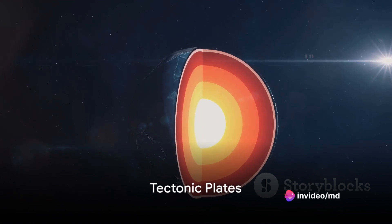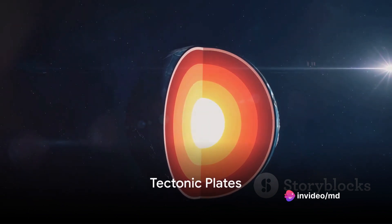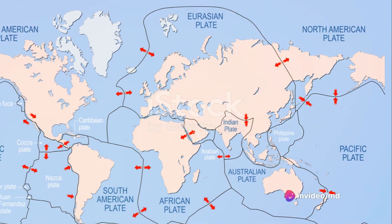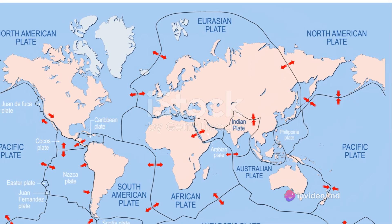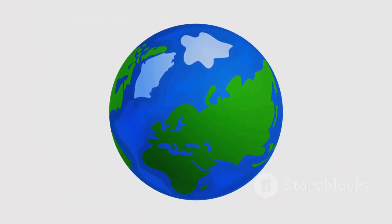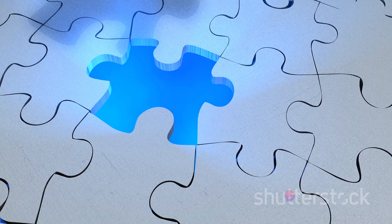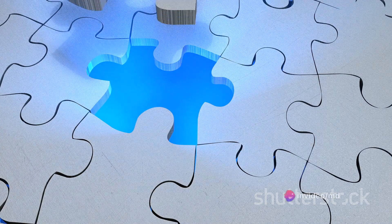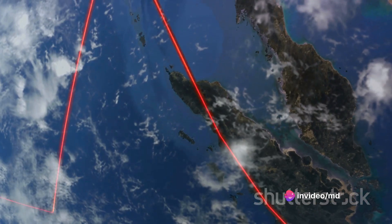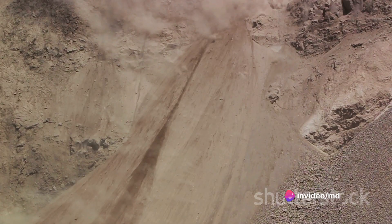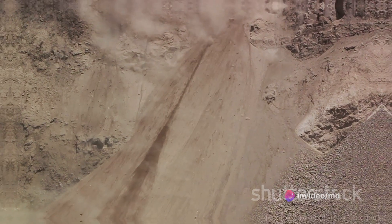Imagine the Earth's crust and upper mantle as a giant jigsaw puzzle. This puzzle is made up of pieces called tectonic plates, and these plates float on a semi-fluid layer beneath them, known as the asthenosphere. Unlike a completed jigsaw puzzle, these pieces are always on the move, albeit at a leisurely pace of a few centimetres per year.